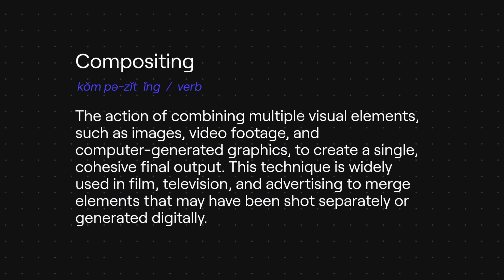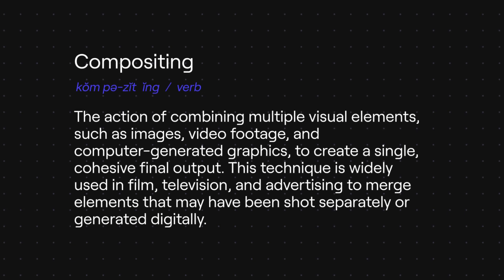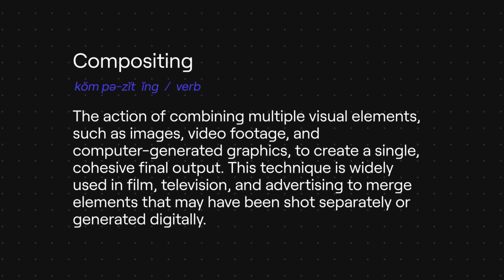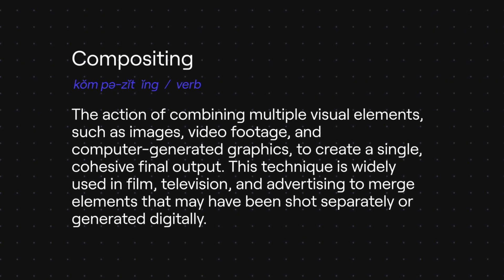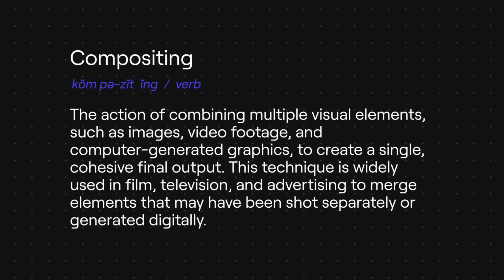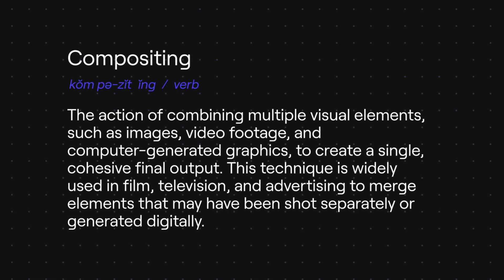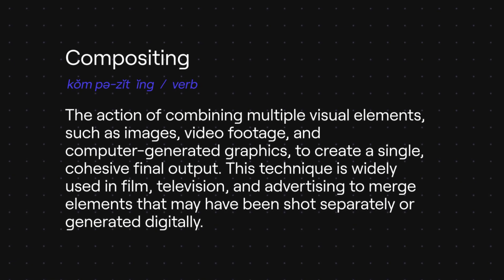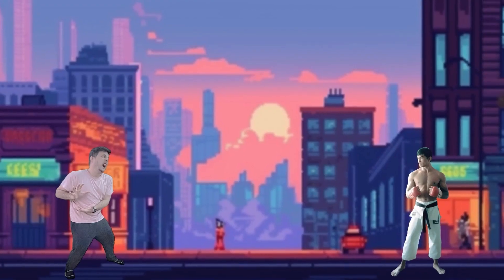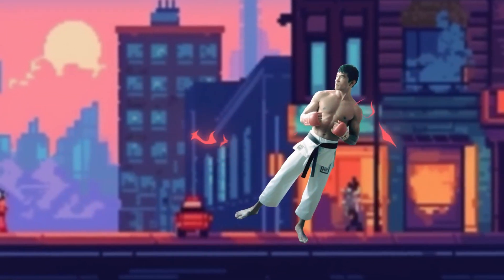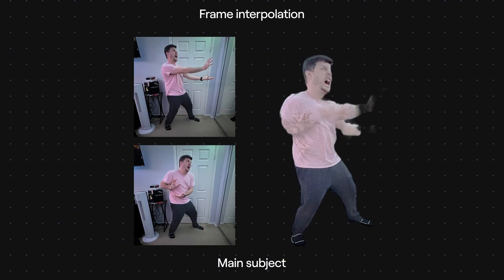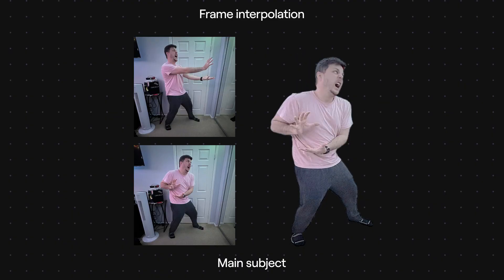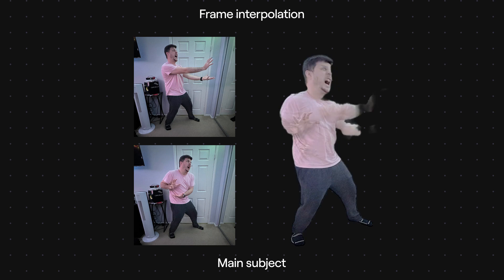For those of you who aren't familiar with the term composite, it's basically like making a collage by putting together different pictures or videos on top of each other to make a final image or video. In this example, I've made a very simple animation comprised of the main subject, which is two images interpolated together using the frame interpolation tool in Runway.